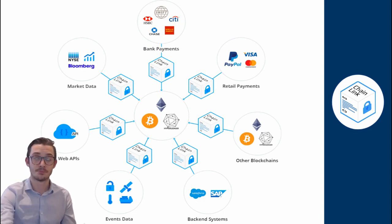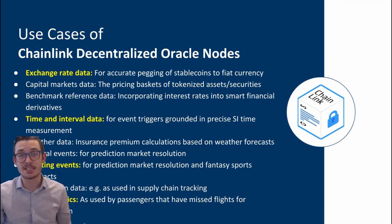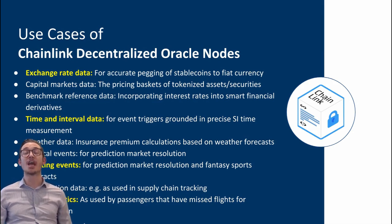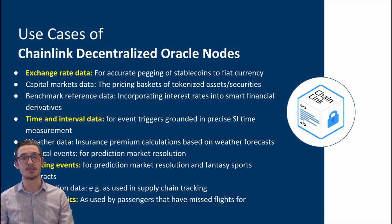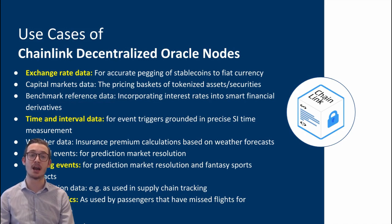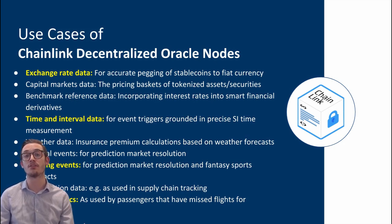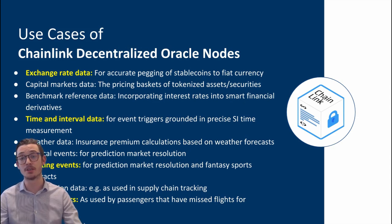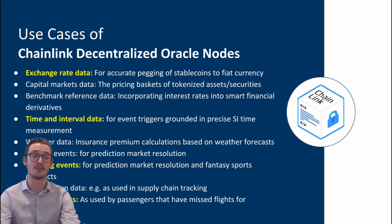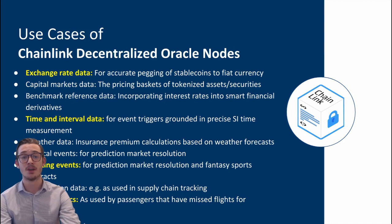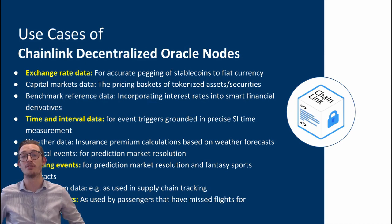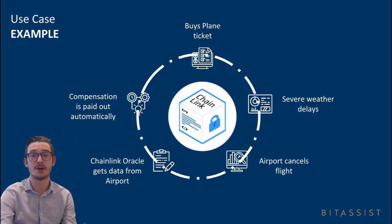There are many use cases for Chainlink decentralized oracle nodes. Exchange rate data — for example, accurate pegging of stablecoins to fiat currencies. Capital markets data for pricing baskets of tokenized assets and securities. Benchmark reference data incorporating interest rates into smart financial derivatives. Time and interval data for event triggers grounded in precise SI time measurement. Sporting events for prediction market resolution and fantasy sports contracts. And flight statistics for passenger compensation when flights are missed.